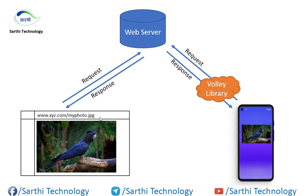Not only can you send a request for an image, but also for strings, JSON objects, and any other data that can be sent by the server. This is the work of the Vali library.